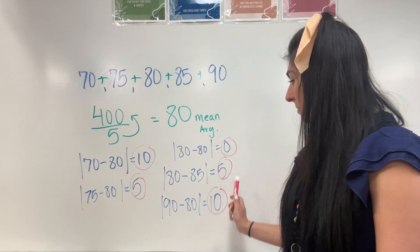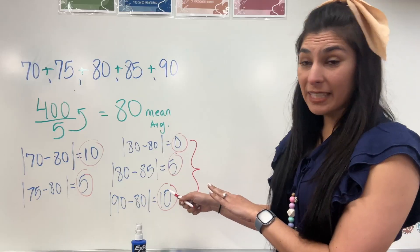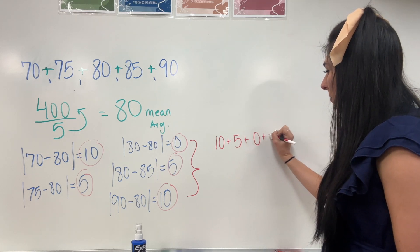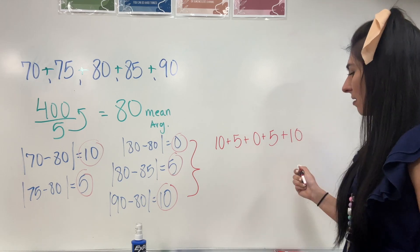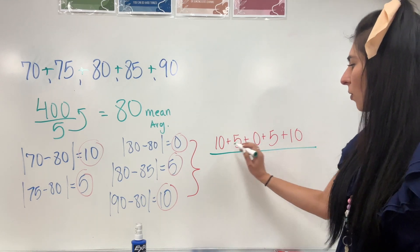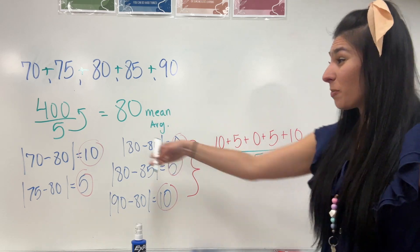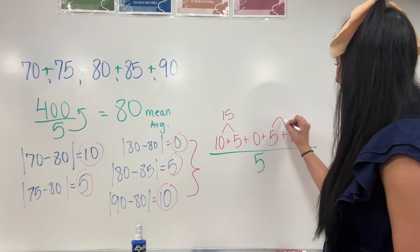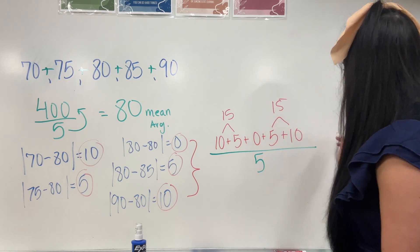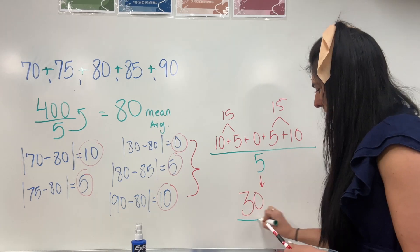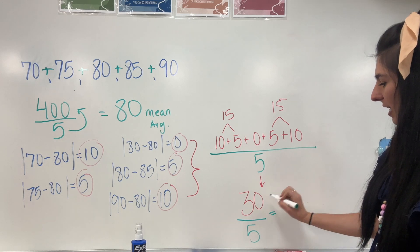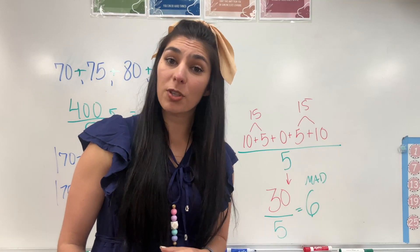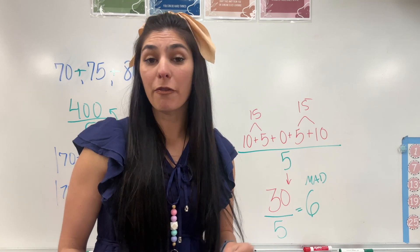So step three, I'm taking these numbers as my new data set and finding the mean again. That gives me 10 plus 5 plus 0 plus 5 plus 10. Because we're finding the average, I'm going to divide all of these by how many numbers there are — five. So I have 15 plus 15; that 0 doesn't do anything. That gives us 30 divided by 5, and 5 goes into 30 six times. So 6 is our MAD. To put this in sentence form: the average distance of each data value from the mean is 6.